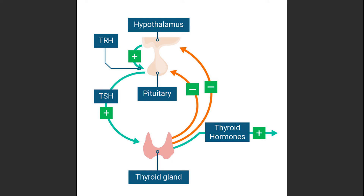The viability of the insulation of your home is T3 and reverse T3. The real feedback loop we want to be concerned with is the viability of the thermostat — TSH — and the viability of the heater, the thyroid gland. We'll go over what markers correlate with that, but just to give us this orientation.